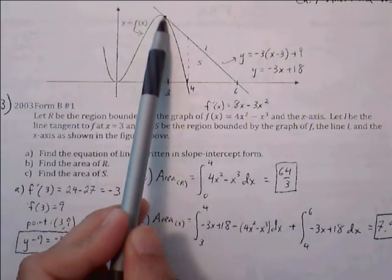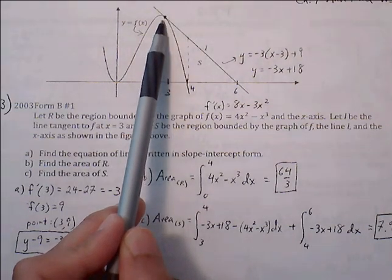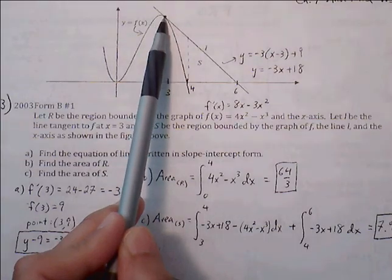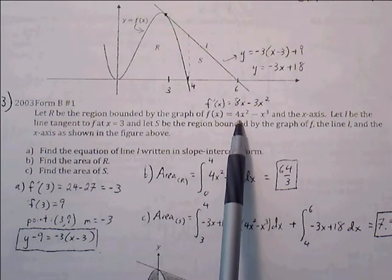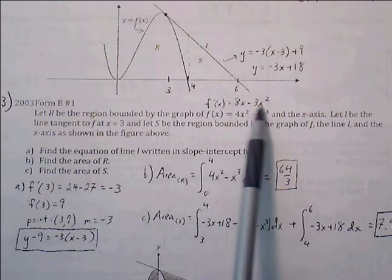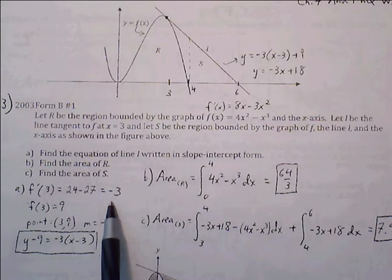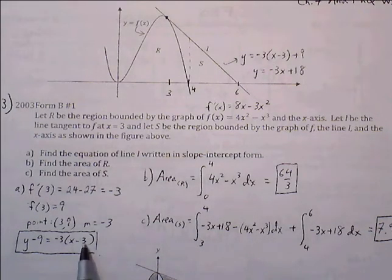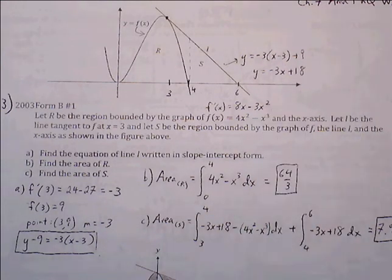Finding f prime of x using the power rule: 4x squared becomes 8x, and x cubed becomes 3x squared. Evaluating the derivative at x equals 3: 24 minus 27 is negative 3. So the ordered pair is (3, 9) and the slope is negative 3. Point-slope form: y minus 9 equals negative 3 times (x minus 3). Distributing and combining like terms gives us y equals negative 3x plus 18.